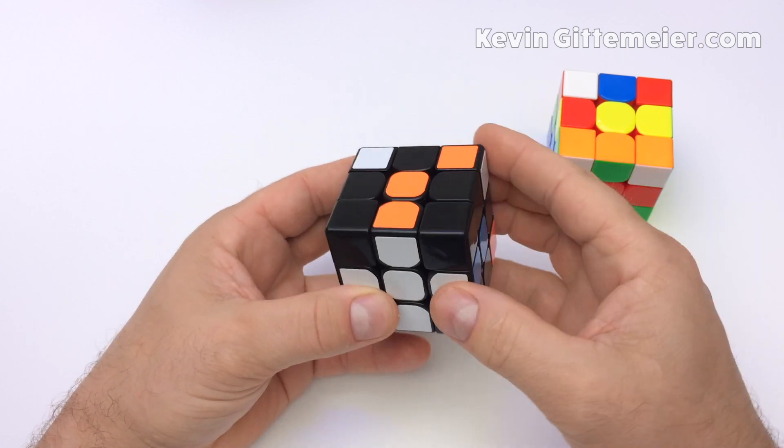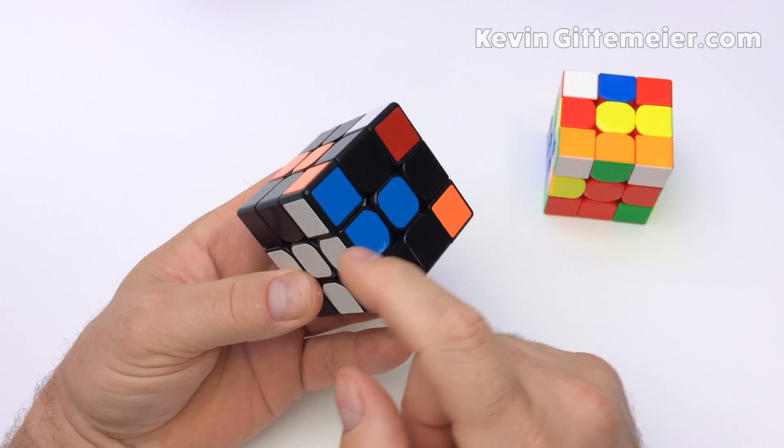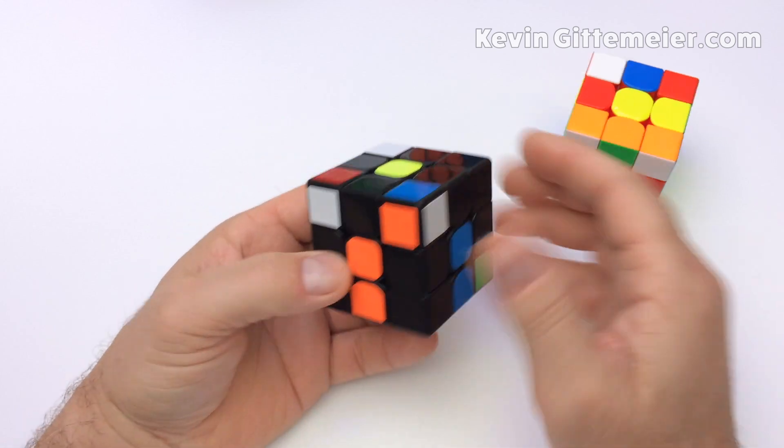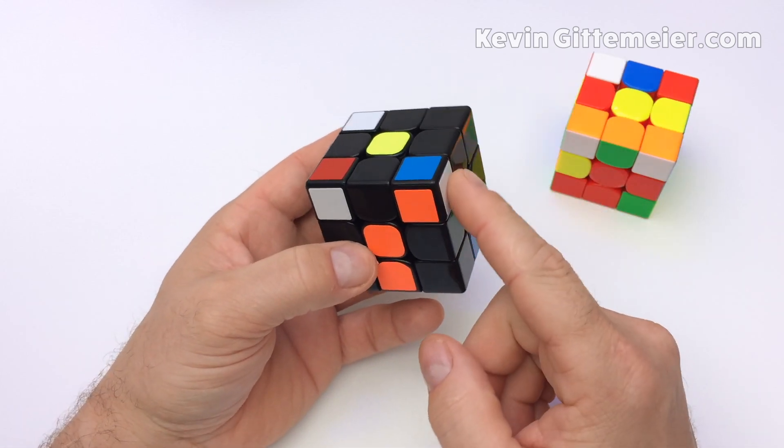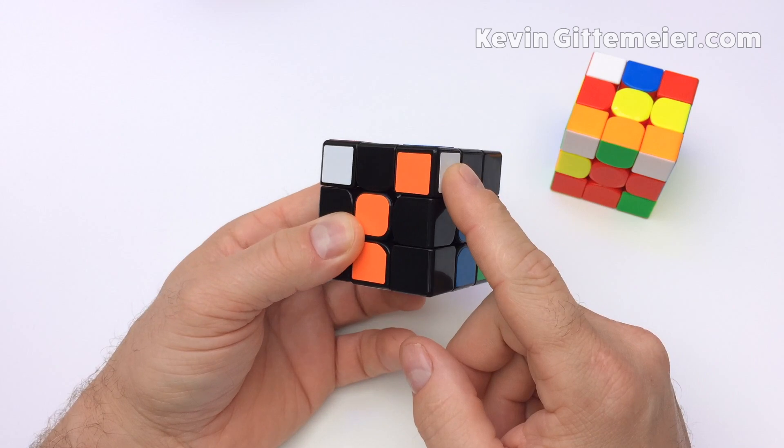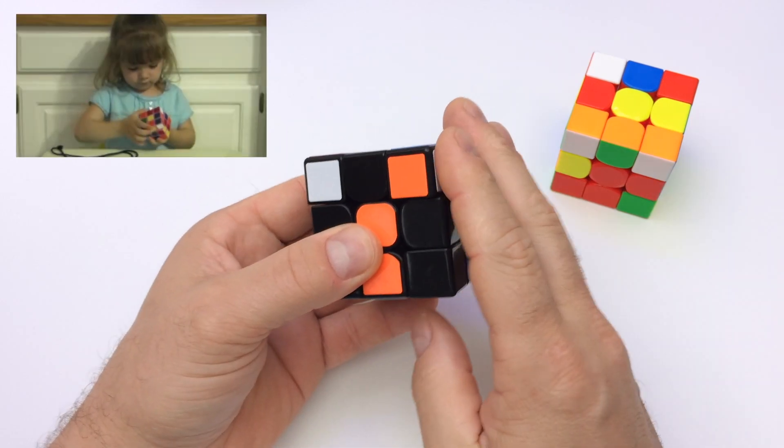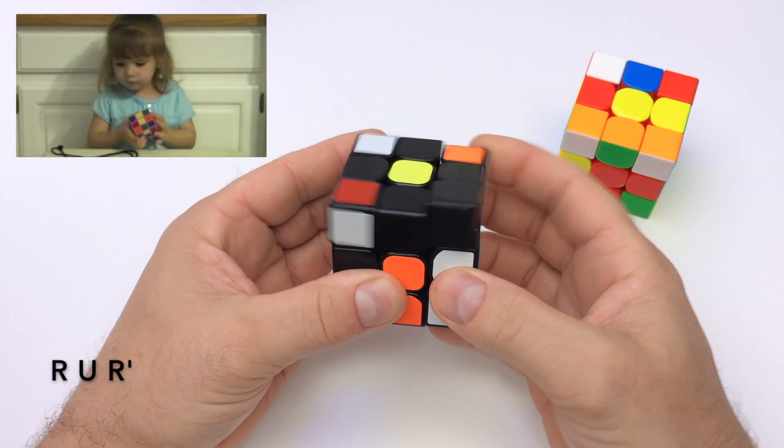We want to insert this corner piece without knocking out our edge piece. An easy way to do that is if the white sticker is on the right side in this example, you slap the white and perform right, up, right prime.